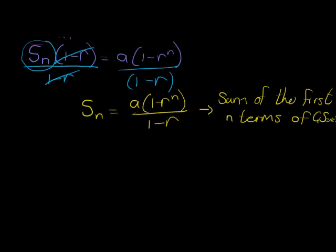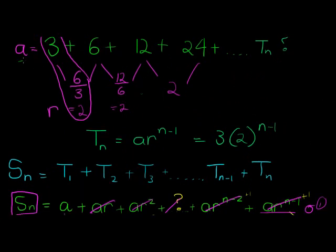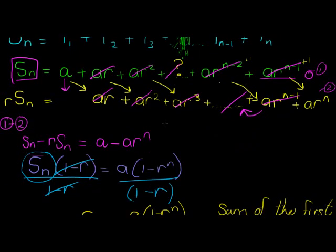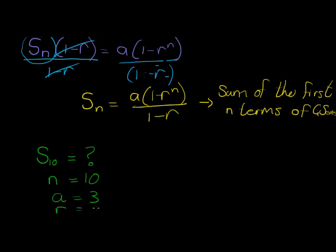Now let's apply this formula to our example to calculate the sum of the first 10 terms. From above, our first term A equals 3 and our constant ratio R equals 2. For the sum of the first 10 terms, N equals 10, A equals 3, and R equals 2. Just substitute into the formula.